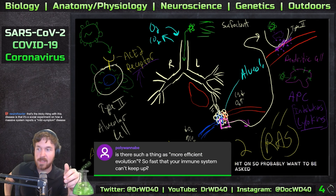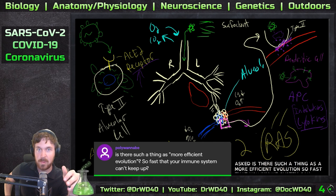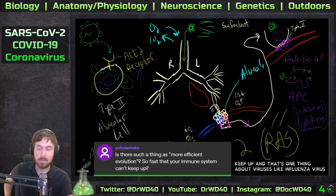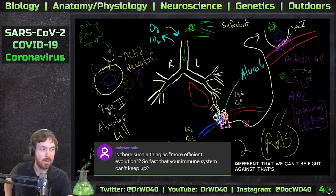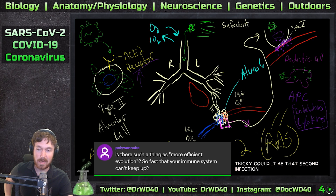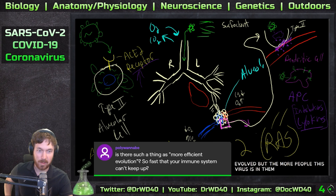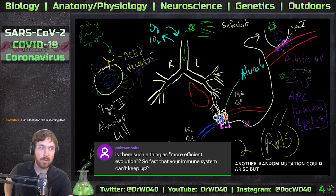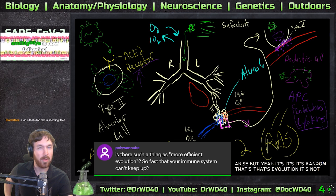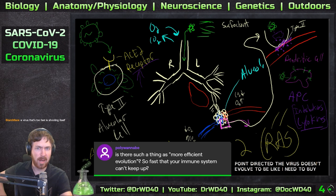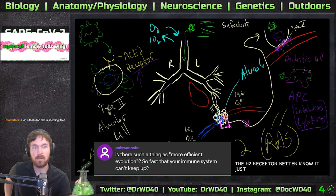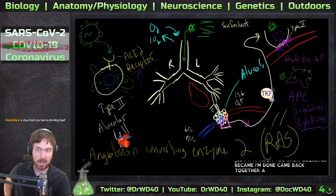A viewer asked: is there such a thing as a virus evolving so fast that your immune system can't keep up? That's one thing about viruses - influenza can easily mix strains and mutate to something we can't fight against. This is another RNA-based virus so it's tricky. Could a second infection be a different strain? You hope it's not, you hope it didn't already evolve. But the more people this virus is in, the more replication it has, the more chances a random mutation could arise. But remember - evolution isn't point-directed. The virus doesn't evolve thinking 'I need to bind to the ACE2 receptor better' - it's completely random.